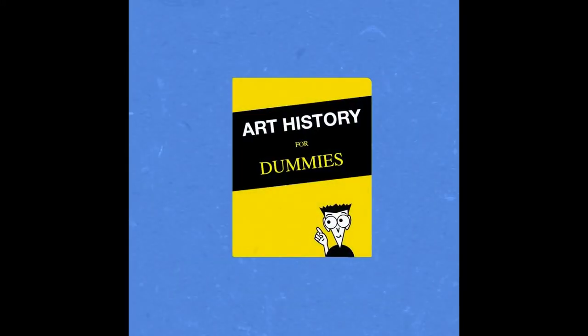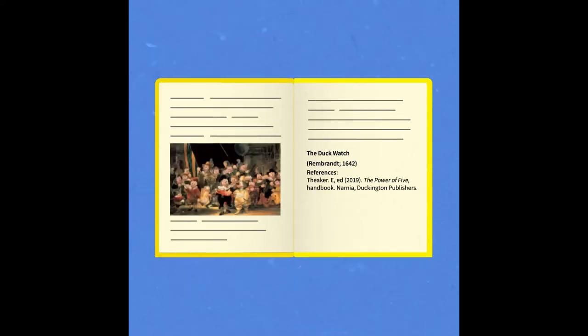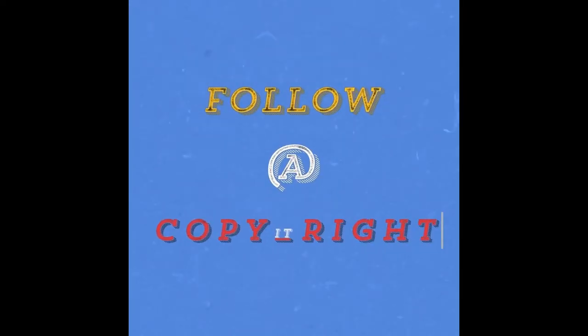Or something you found in a book. The easiest way to avoid committing plagiarism is by referencing or acknowledging the source. Read up on how your learning institution or workplace goes about referencing sources. It'll save you a lot of trouble in the long run. Follow at Copy It Right to learn more.